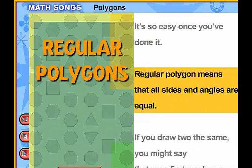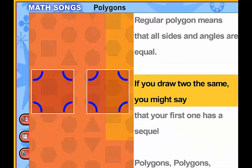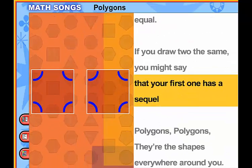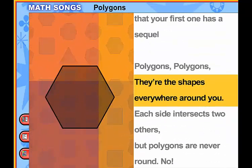Regular polygons means that all sides and angles are equal. If you draw two the same, you might say that your first one has a sequel. Polygons, polygons, they're the shapes everywhere around.